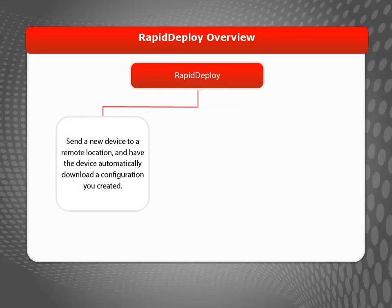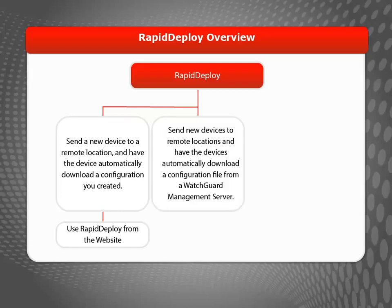There are several ways you can use Rapid Deploy. Perhaps you want to send a new device directly to a remote location that doesn't have a network administrator to set it up. You can create a configuration file for the device, then upload the file to the WatchGuard cloud servers. Or, maybe you use the centralized management feature set and have new remote sites you want to set up through your management server.